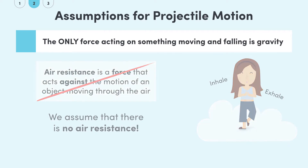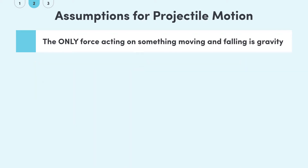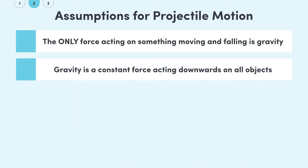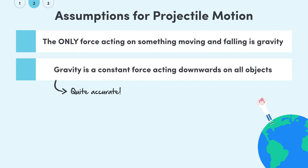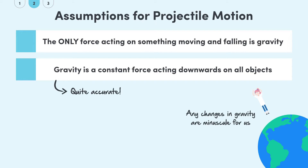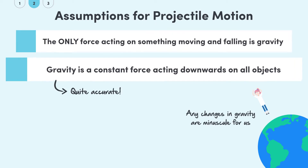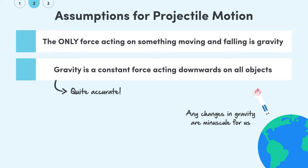The second assumption is that gravity is constant. This is far more accurate than the previous one. Although gravity does change a little bit with height, the changes are minuscule at any scales we'll be looking at. So those are your assumptions: no air resistance, and constant gravity.